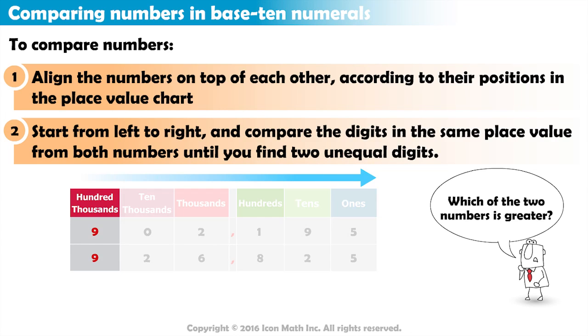We have the digit 9 in the hundred-thousands place from both numbers, so we move to the next place, the ten-thousands place.